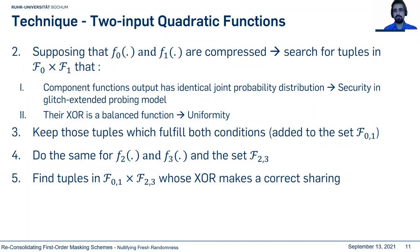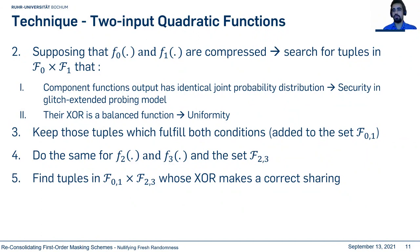Tuples fulfilling both conditions are added to set F01. We do the same for component functions F2 and F3 to make set F23. In the last step, we search for tuples whose XOR produces the correct sharing. Unlike TI, which starts with correctness and non-completeness and adds correction terms for uniformity, our algorithm starts with non-completeness, uniformity, and Glitch Extended Probing security, then finds the correct sharing.